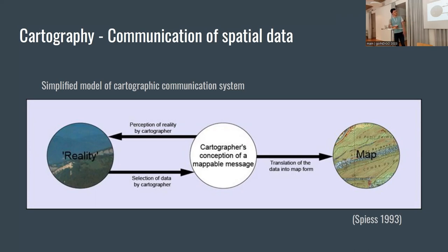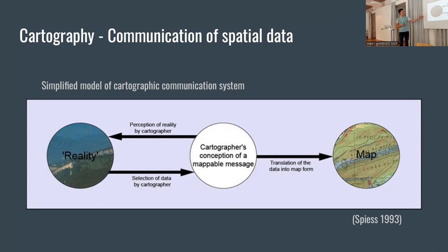First of all, cartography. I can call myself a cartographer. To the left, it's hard to read, but it's the reality — objective reality. A cartographer perceives reality as we all do, and then there's a selection of data that the cartographer makes. He then translates that onto a map, which is basically one-way communication of spatial data.